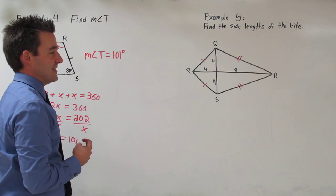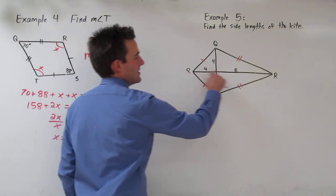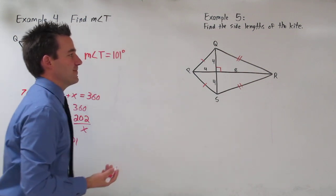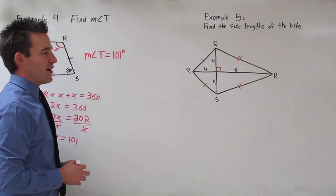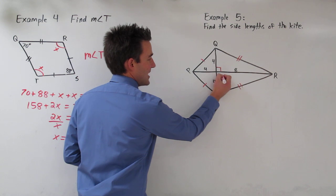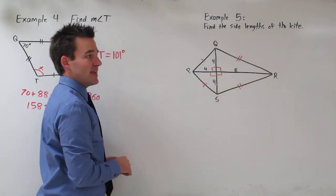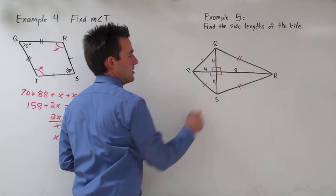Another property of kites is that the diagonals are perpendicular. Now, I see four triangles. And it's actually four right triangles. So we can use Pythagorean theorem to find these unknown sides.